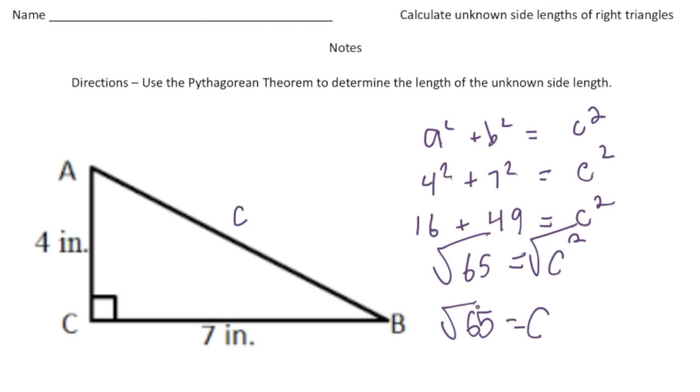So c is going to equal the square root of 65. Now again that's fine. But because we have an irrational number here as the square root of 65 I can just round it. So we could say c is going to be 8.06. And I rounded that to the nearest hundredth place. And there it is.